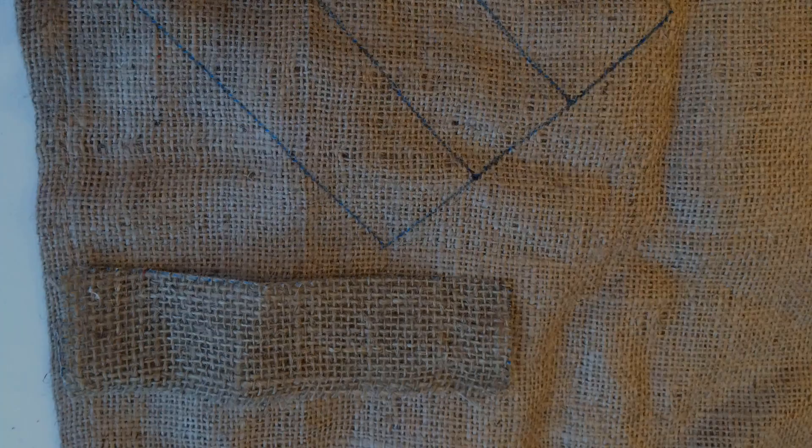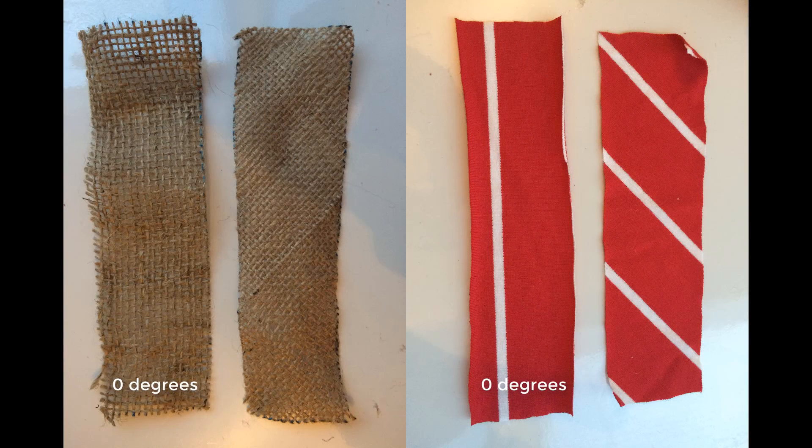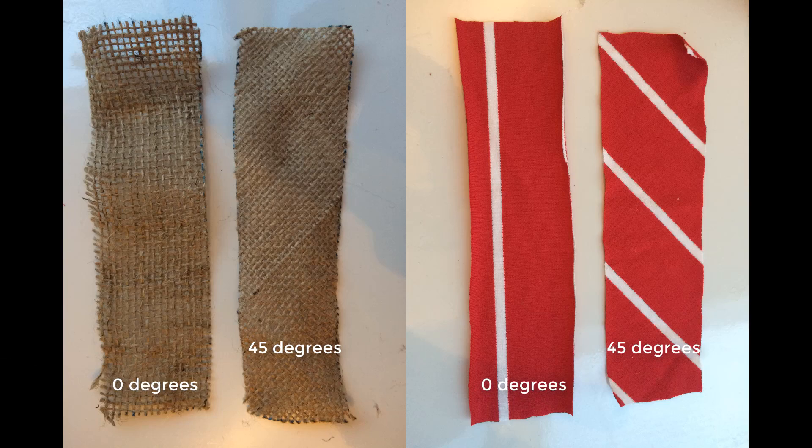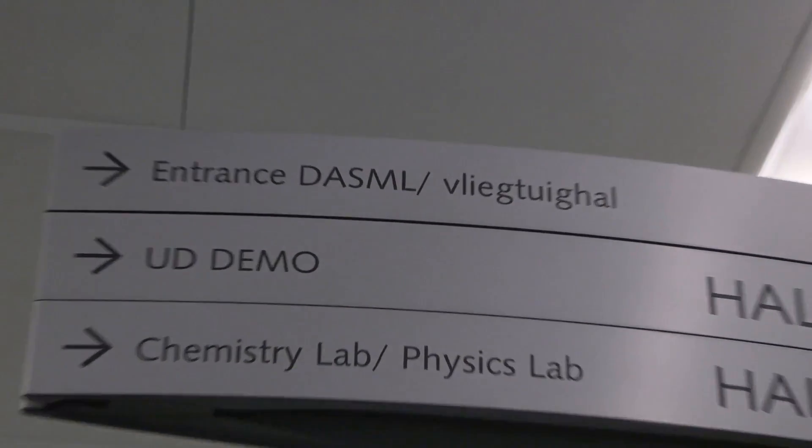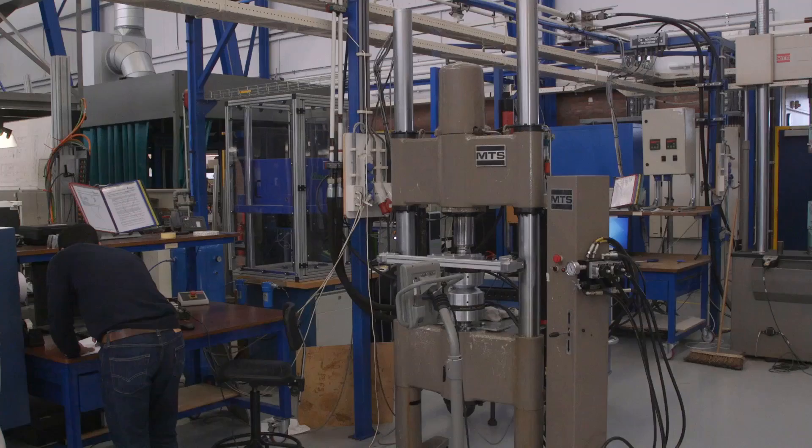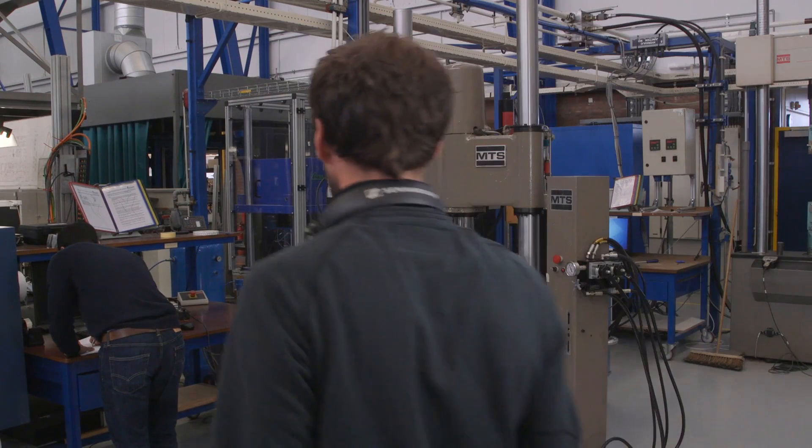As in our experimental design, we will cut rectangular specimens from these materials, one at an angle of 0 degrees and the other at an angle of 45 degrees. Now that we have our specimens, let's go to our Delft Aerospace Structures and Materials Lab to test them.